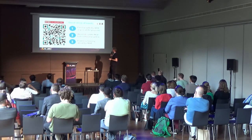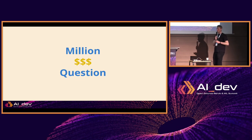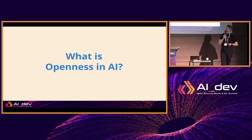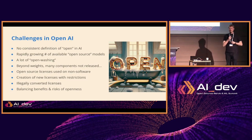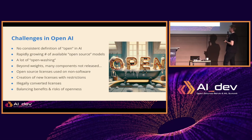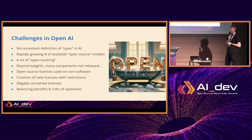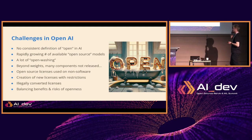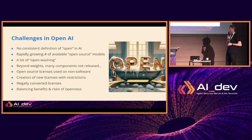Let's start with some background. The million dollar question is: what is openness in AI? I haven't come with a definition — just a list of problems. If you're interested in following work to develop a definition, check out what the Open Source Initiative is doing and participate in their working group. Here are some of the problems we're facing: there's no consistent definition of openness in AI or open source AI; there's a rapidly growing number of models calling themselves open source but with a lot of open-washing; many new or restrictive licenses are being applied; and beyond weights, many components used in development are not being shared.